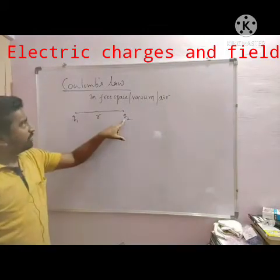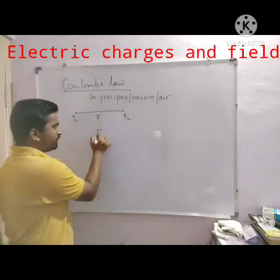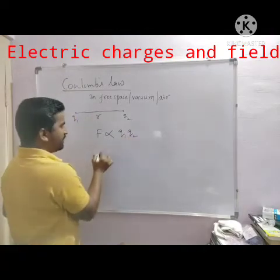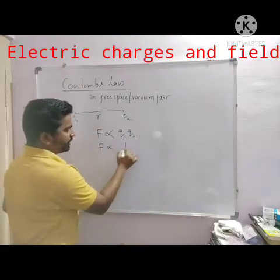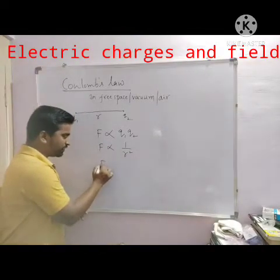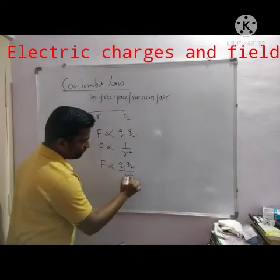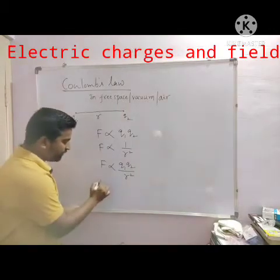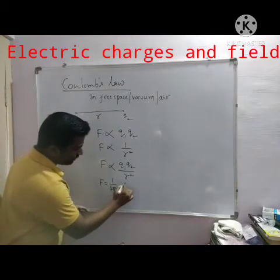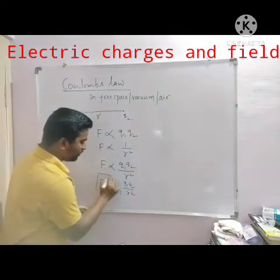Coulomb's law states that the force between two point charges Q1 and Q2 is directly proportional to the product of the charges and inversely proportional to the square of the distance between them. Combining this, with the proportionality constant 1 divided by 4 pi epsilon naught, the force F equals Q1 times Q2 divided by 4 pi epsilon naught R squared. This is Coulomb's law.